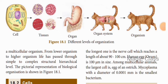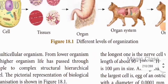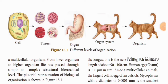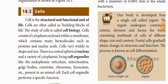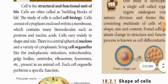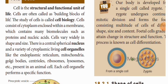Here we can see a pictorial representation: a cell contains organelles, a group of cells combined to perform a specific function forms a tissue, tissues are combined to form organs, and organs form an organ system, finally giving us the organism. The cell is the structural and functional unit of life, also called the building blocks of life. The study of cells is called cell biology.